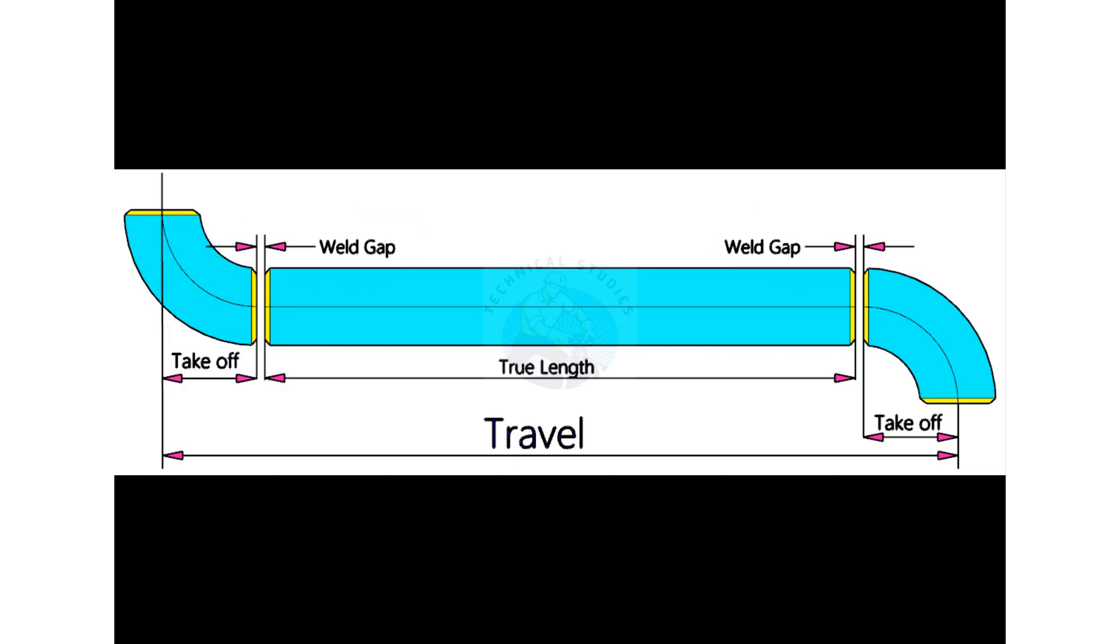So how will we calculate the true length of the spool? The true length or cut length is: add two welding gaps and two take offs, then subtract this sum from the travel.